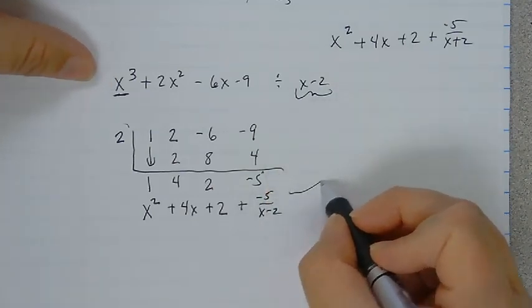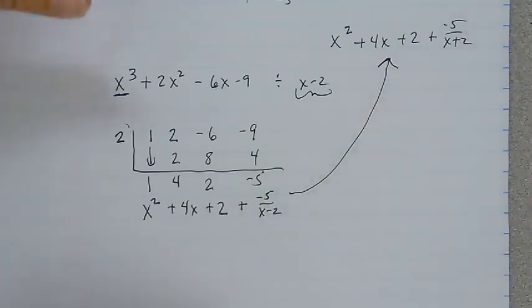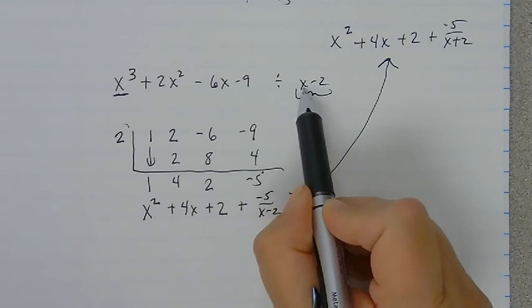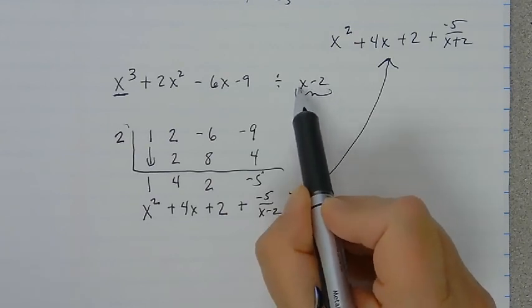Notice this answer looks just like this answer. It's a way easier method for doing long division. It's called synthetic division. And it works every time the thing that you're dividing by is two terms and has a 1 right here.